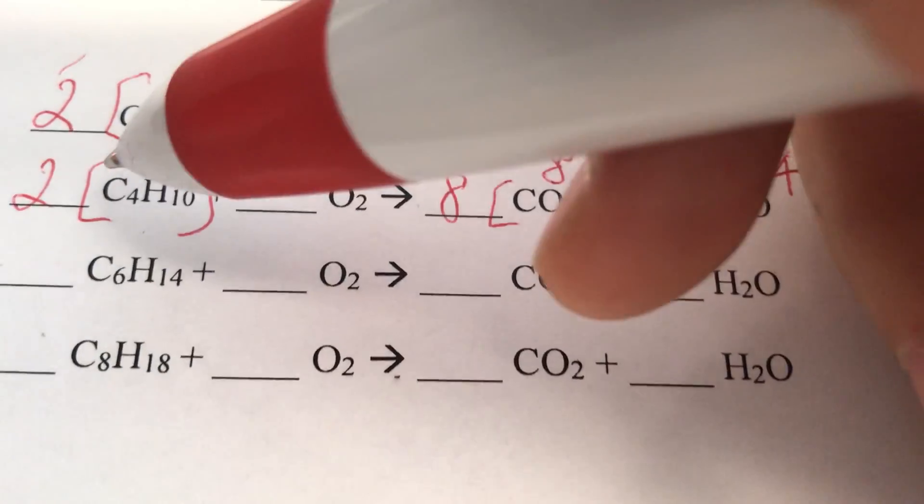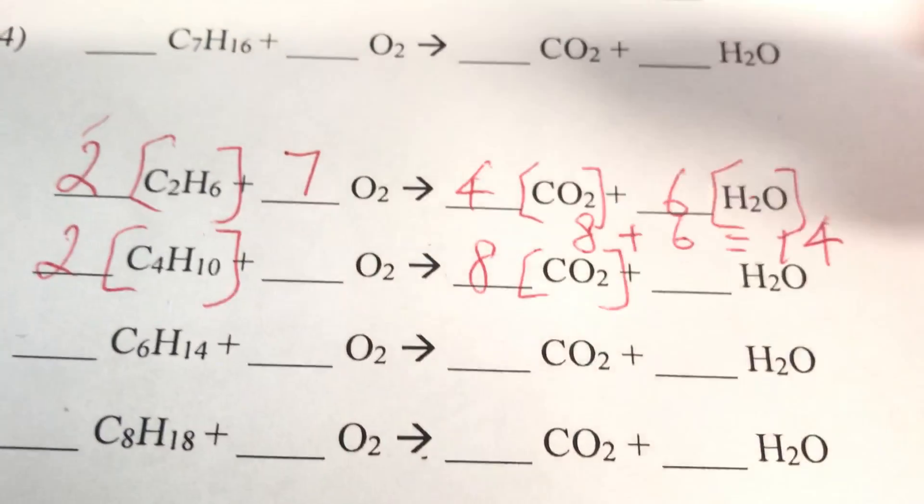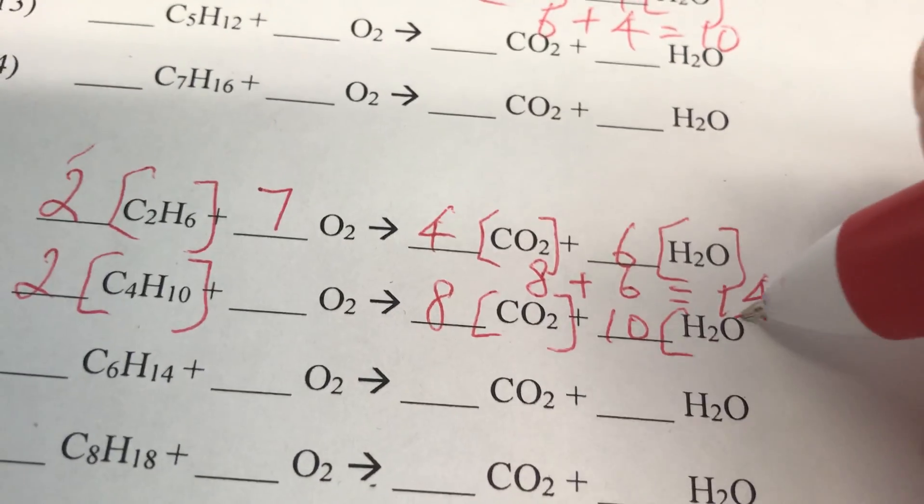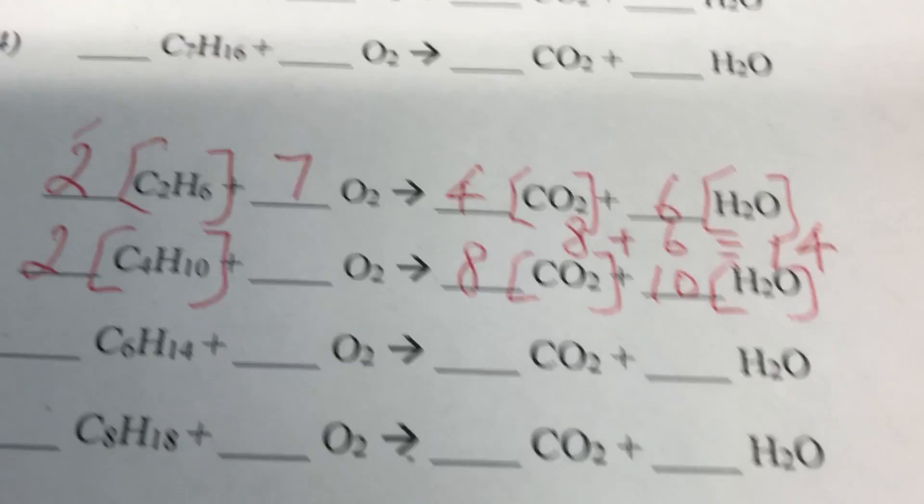Next thing is hydrogen. 2 times 10 is 20 hydrogen. Here is 2 hydrogen. So put 10 and bracket around H2O. So hydrogen is balanced.